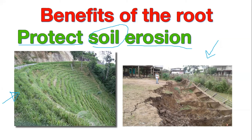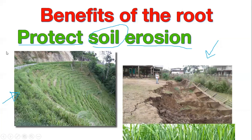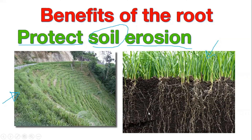We plant grass along the soil surface, because the grass has roots that look like hair — fine and spreading everywhere. These roots help in holding the soil, keeping it firm and preventing it from eroding. The roots hold the soil tightly so it doesn't collapse or wash away. That is the benefit of the roots.